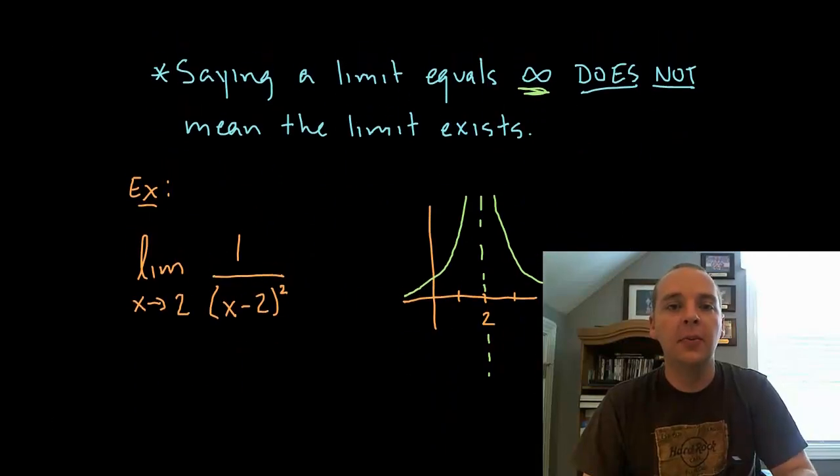Alright, so here's an example. If we had the limit as x goes to 2 of 1 over the quantity x minus 2 squared, well then from the right hand side of 2 it would go towards positive infinity and from the left hand side of 2 it would go towards positive infinity.